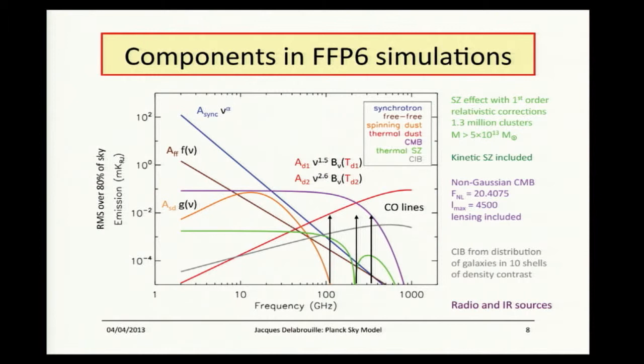The CIB is modeled from a distribution of galaxies in 10 shells of density contrast at different redshifts, and I will describe that in more detail. There are also radio and infrared sources described with catalogs. I won't say a word about polarization because for the moment we are just delivering the temperature maps. By the way, these simulations should be made available soon so that people who want to analyze Planck data can also play with the simulations.